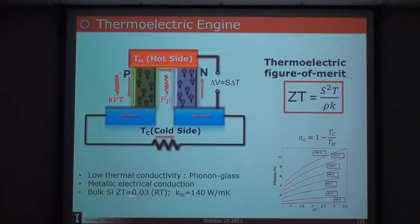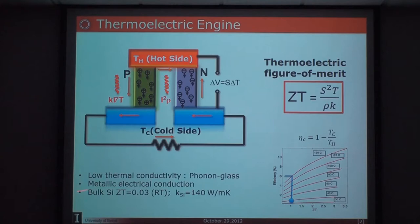This chart shows ZT versus efficiency: even if you have a material with a ZT of 1 or even 0.5, you can get an efficiency of up to 6%, which is actually a large amount of energy considering the amount of waste heat available. The problem with silicon is it has a very low thermoelectric figure of merit of 0.03, mainly because of its very high thermal conductivity. The strategy for making silicon into a better thermoelectric material is to nanostructure it.